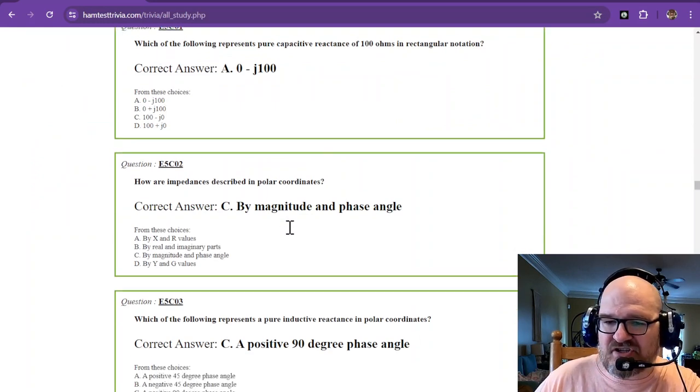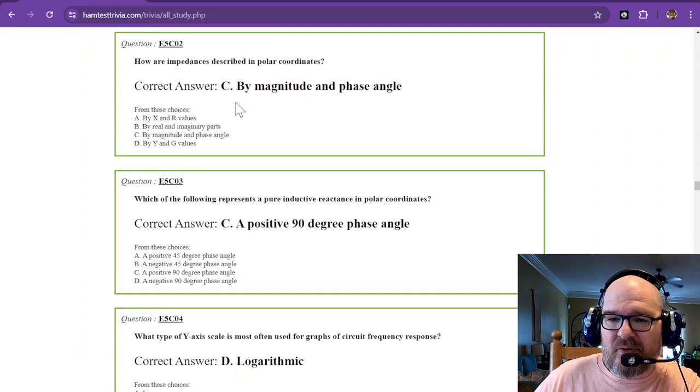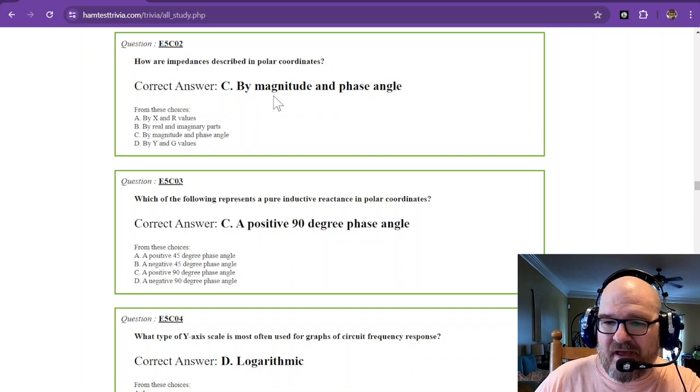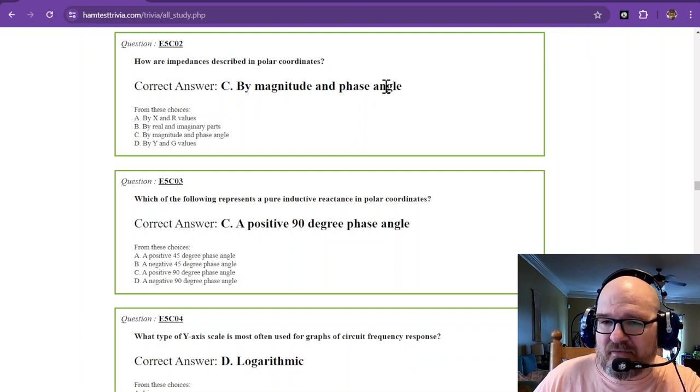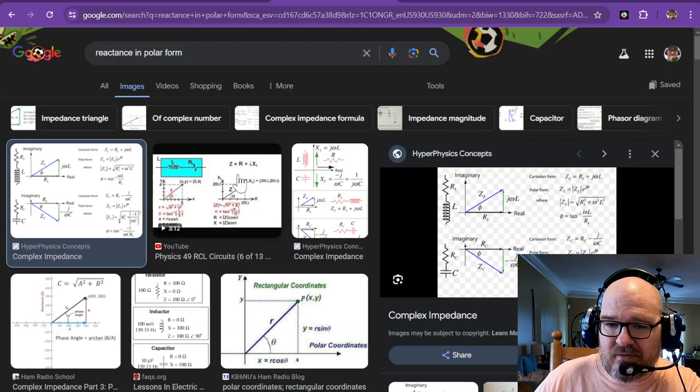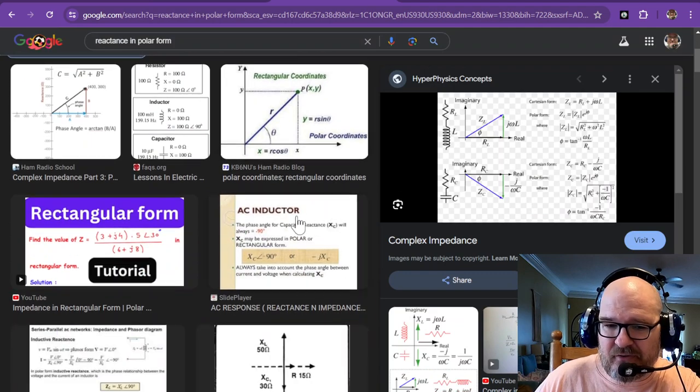Now looking at question number two, how are impedances described in polar coordinates? They are by magnitude and phase angle. Magnitude and phase angle. I do not have a drawing of the phase angles on these, but you'll see, if you want to Google it, you can go see some polar forms, such as what I had to look up here to figure out how to do it.